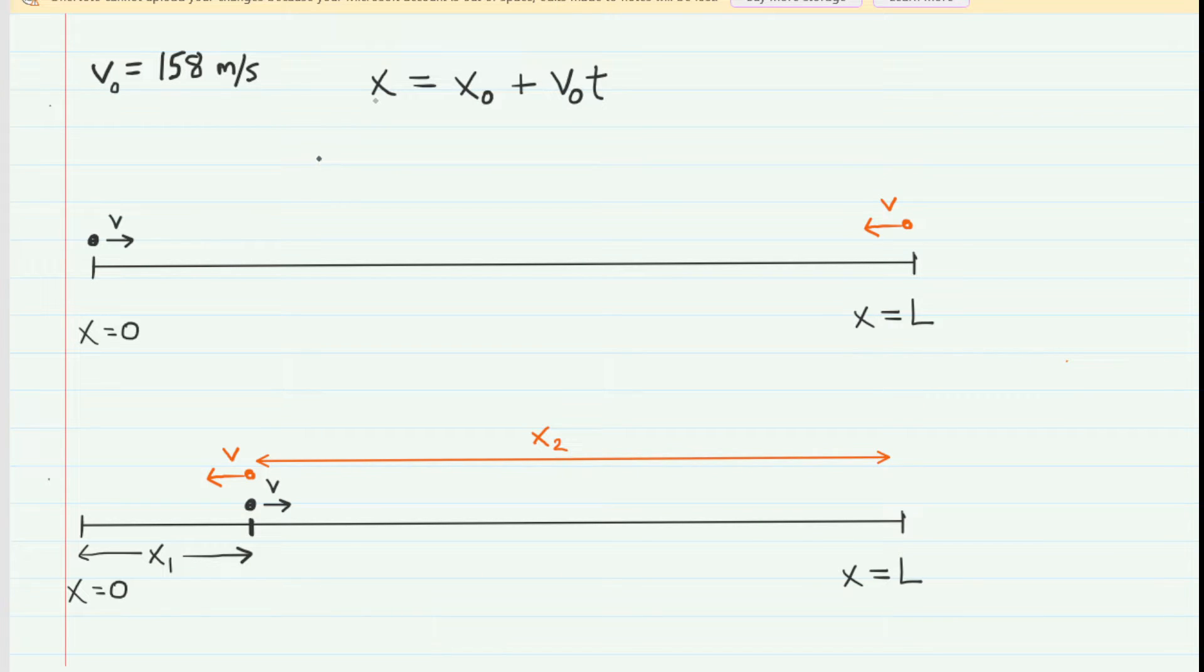For the first pulse, we're going to call that x-coordinate, that final x-coordinate, x sub 1. That's going to equal the initial x-coordinate, which you can see from the picture, is 0, plus the initial velocity, which we calculated earlier, of 158, multiplied by the time of travel. Now we can eliminate this 0 here. That's going to give us the expression for the x-coordinate, the final x-coordinate of pulse 1.